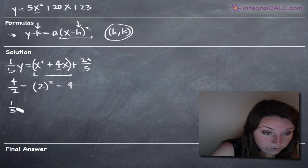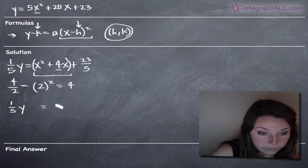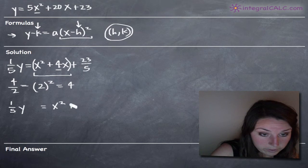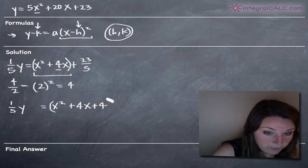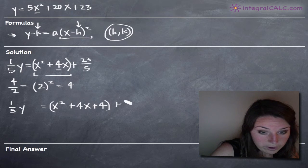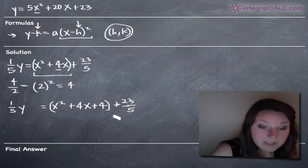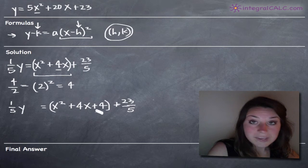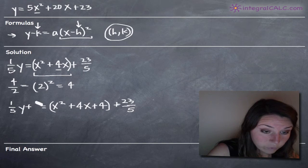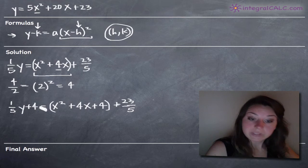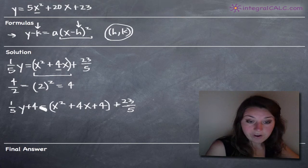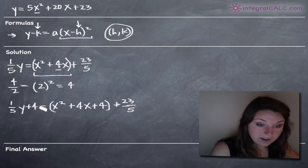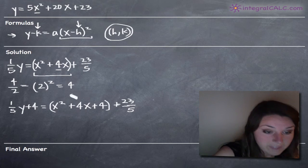So we'll do 1 fifth y equals x squared plus 4x plus 4. So that's going to complete the square. Of course, we've got our 23 fifths out here. But because we added 4 to the right-hand side of our equation, in order to keep our equation balanced, we have to also add 4 to the left-hand side. Whenever you complete the square, you've got to add the constant to both sides. So we added it to the right which means we've got to add it to the left as well.